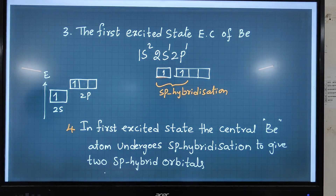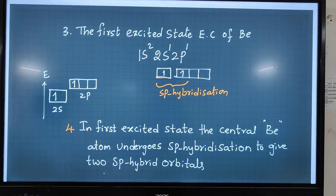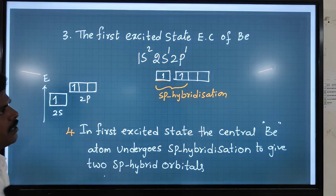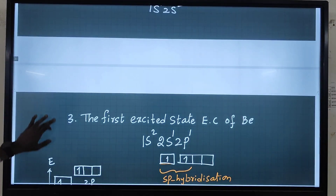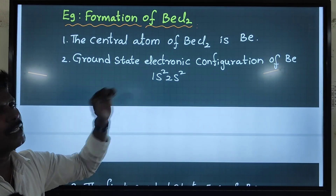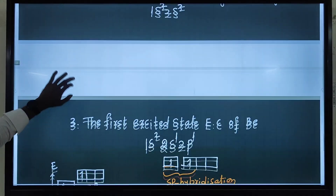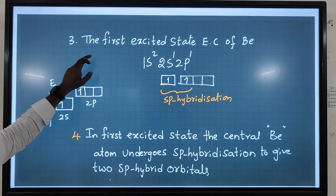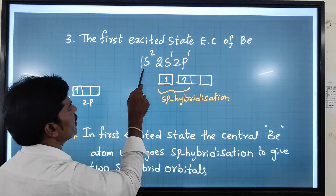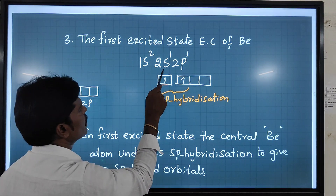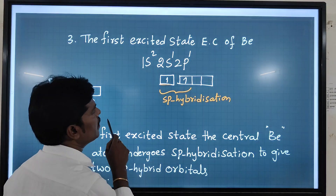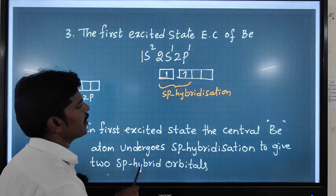The first excited state electronic configuration of Be: one electron transfers from 2s to 2p. In the ground state, the 2p subshell is empty. If you give some energy, beryllium reaches the first excited state with configuration 1s² 2s¹ 2p¹ — the 2s subshell has one single electron and the 2p subshell also has one single electron.